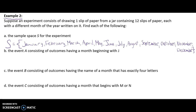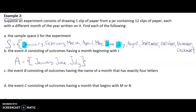Make sure in your set notation that you are using curly brackets on either end, and it's always good to label your set. For example B, the event A consisting of outcomes of a month beginning with J — we go through our set and mark off any month with a J: January, June, and July. So set A equals {January, June, July}.